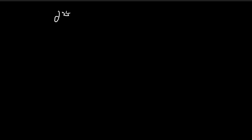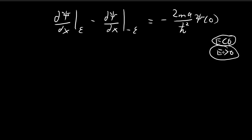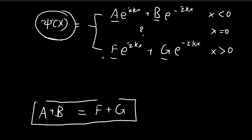The second relationship comes from integrating the Schrödinger equation itself, as we derived earlier. That result applies whether E is smaller than 0 or larger than 0, so it applies here too. To use this expression, we need to differentiate psi(x). Note that by the continuity property, at x = 0, psi(0) must equal A + B (equivalently F + G).